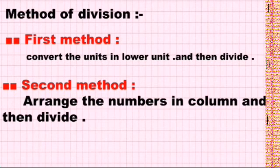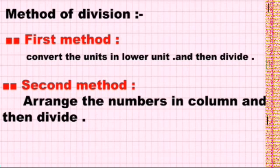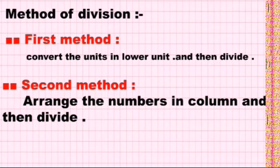Now let us learn two types of methods of division. In the first method, we can convert the units to a lower unit and then divide in the normal procedure. If there is meter and centimeter in a problem, we have to convert the number to centimeter. In the second method, we make columns of units, put the proper number in the proper place, and then divide.